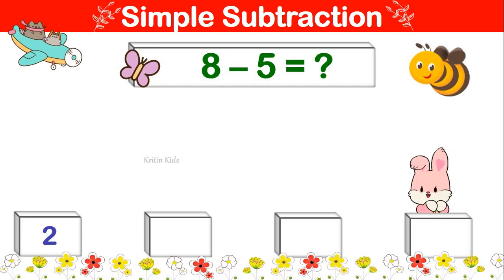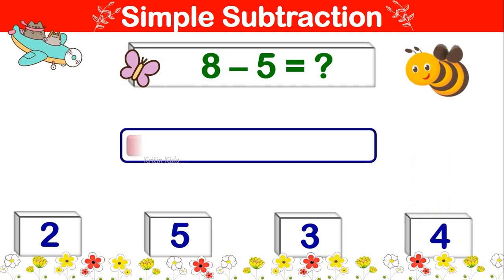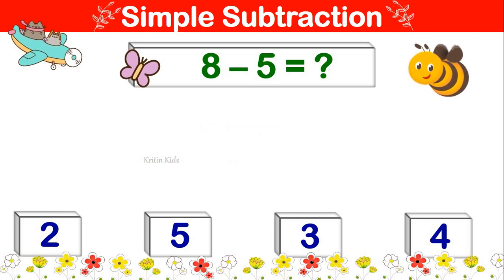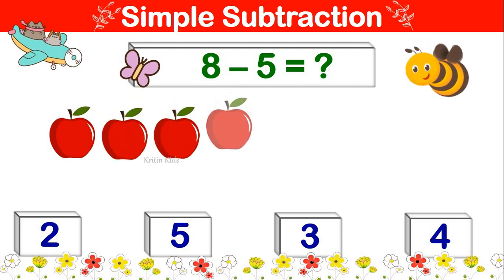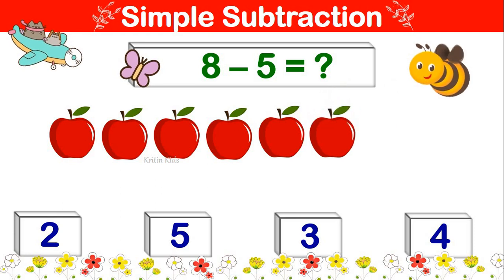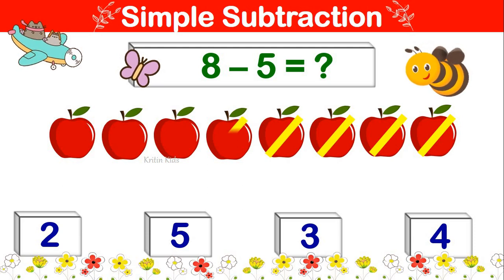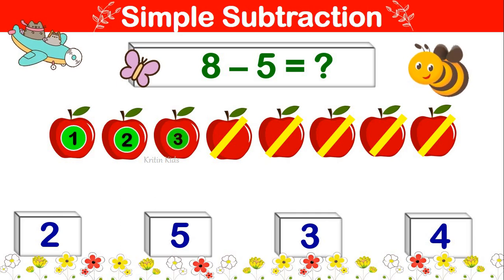8 minus 5 is equal to. Let's take 8 and subtract 5 from it. 1, 2, 3, 4, 5, 6, 7, 8. Now let's subtract 5 from it. 1, 2, 3, 4, 5. Remaining is 1, 2, 3. 8 minus 5 is 3.